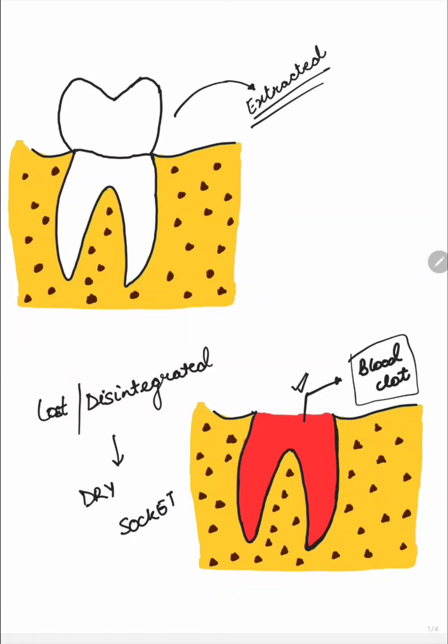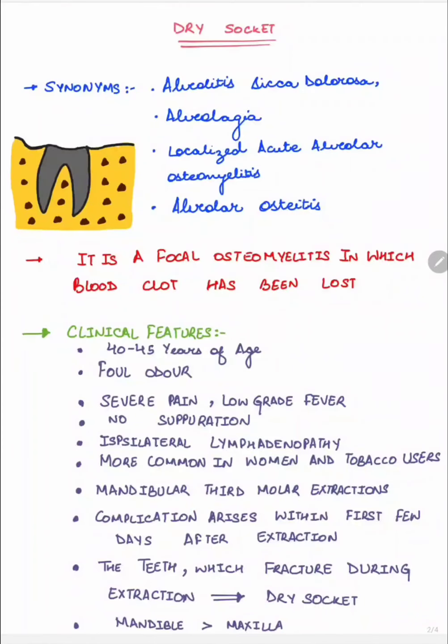So in this video, we'll discuss about dry socket. Dry socket is also known as alveolitis sicca dolorosa, alveolagia, localized acute alveolar osteomyelitis, and alveolar ostitis. But why is it known as dry socket? After the dislodgement or disintegration of the blood clot, the socket appears very dry due to the exposed bone. Therefore, the term dry socket is used.